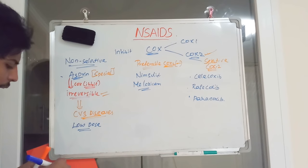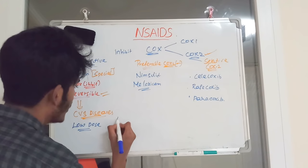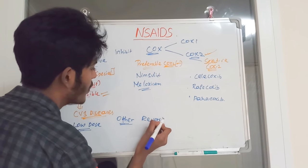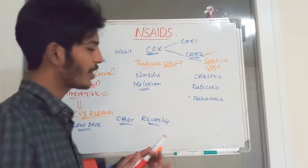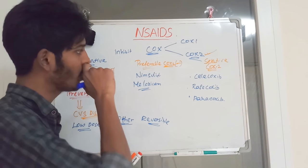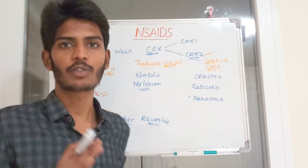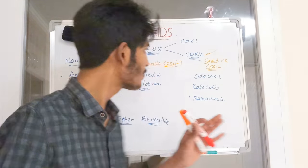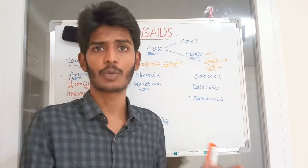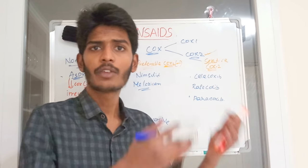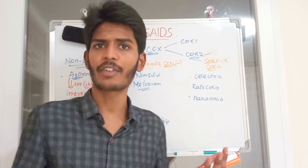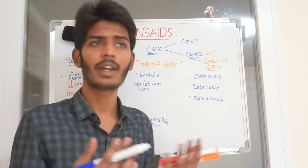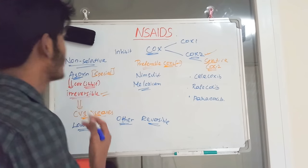Other NSAIDs are reversible inhibitors. Preferable COX-2 inhibitors have most effect on COX-2 and least effect on COX-1. Selective COX-2 inhibitors act only on COX-2 — when COX-2 is inhibited during inflammation, there is no abnormal prostaglandin production and therefore no inflammatory response. This is the mechanism of action of NSAIDs.